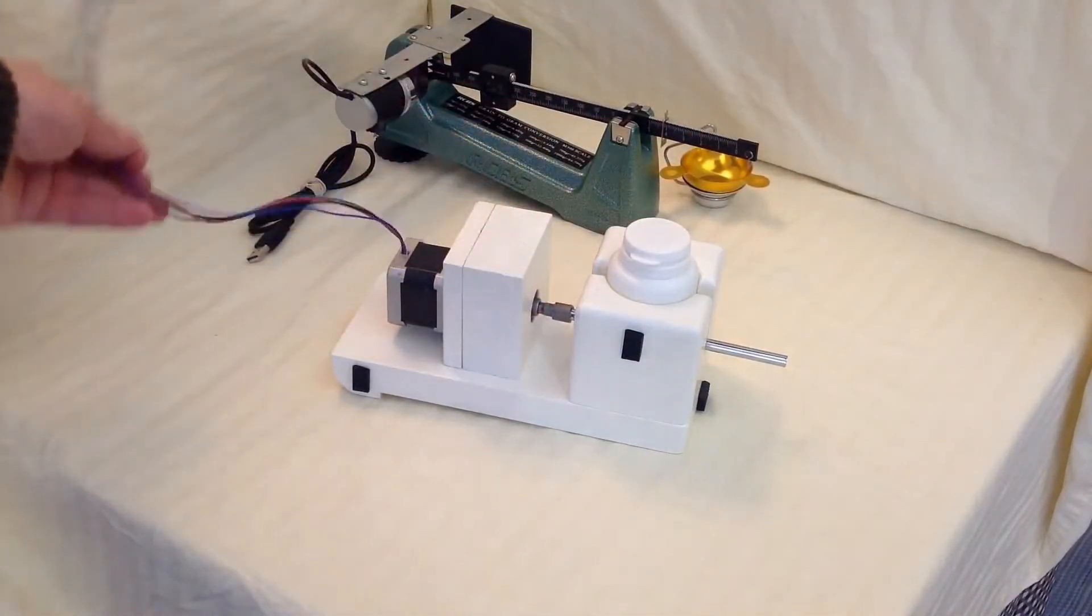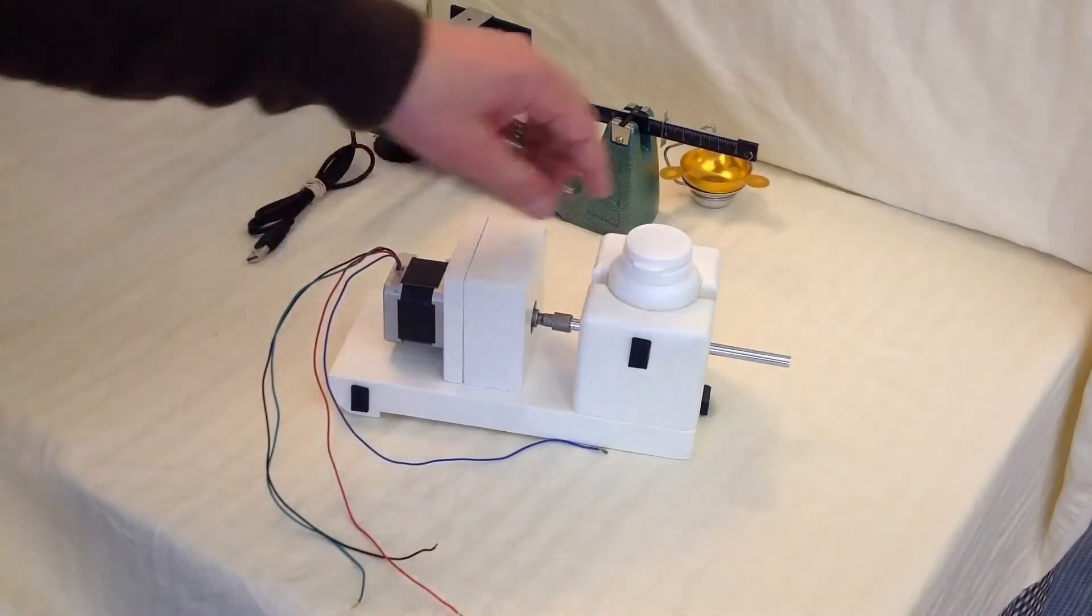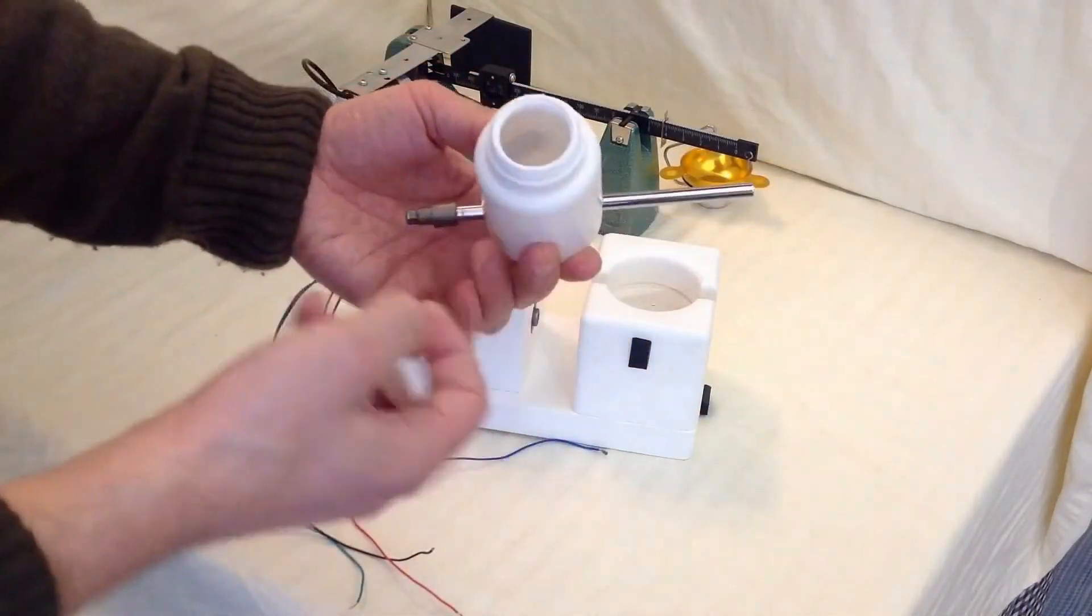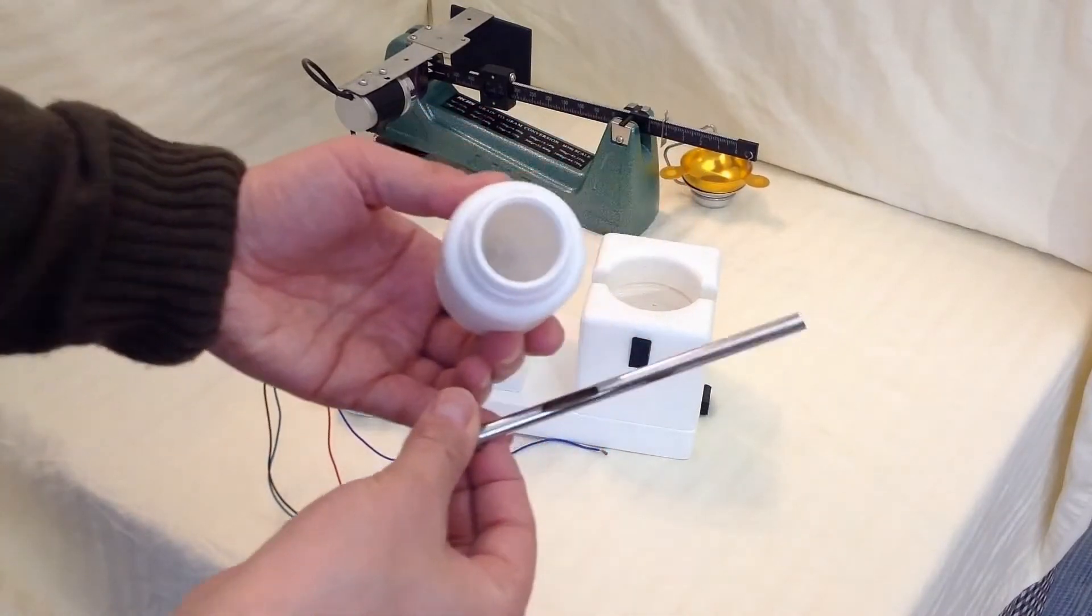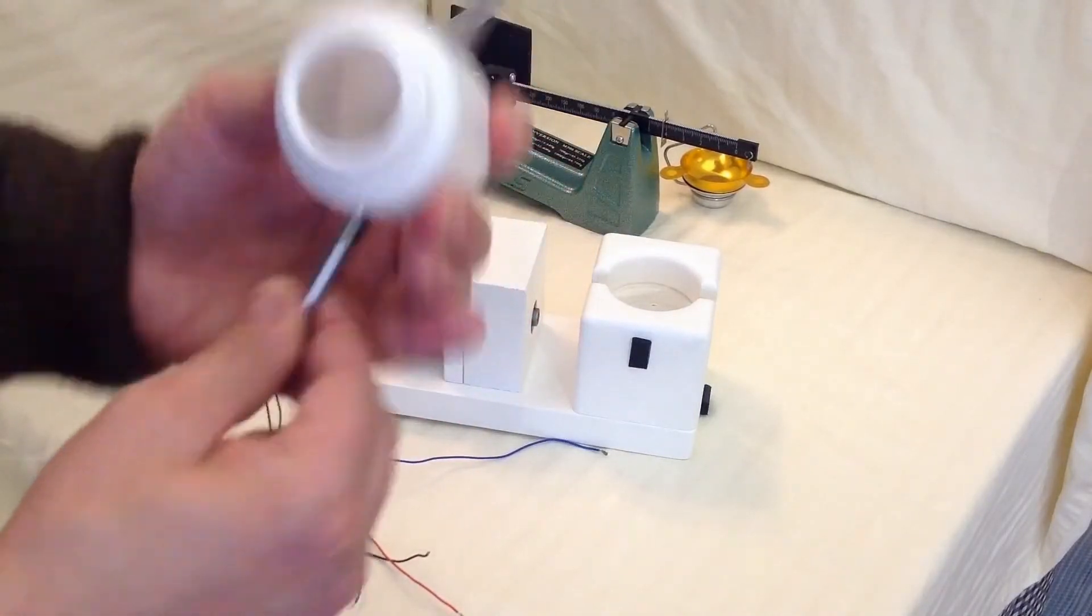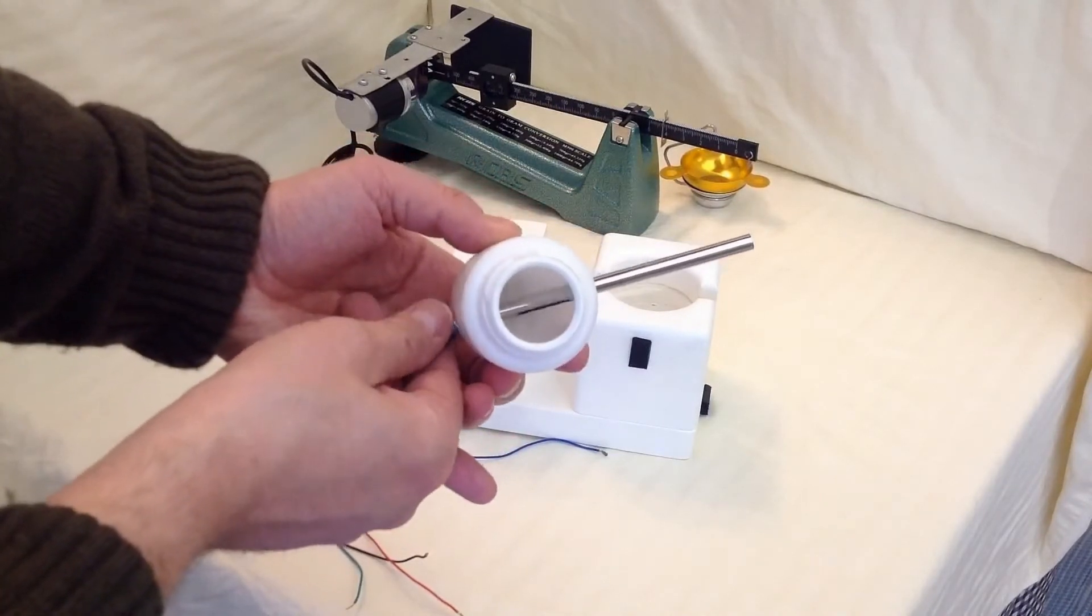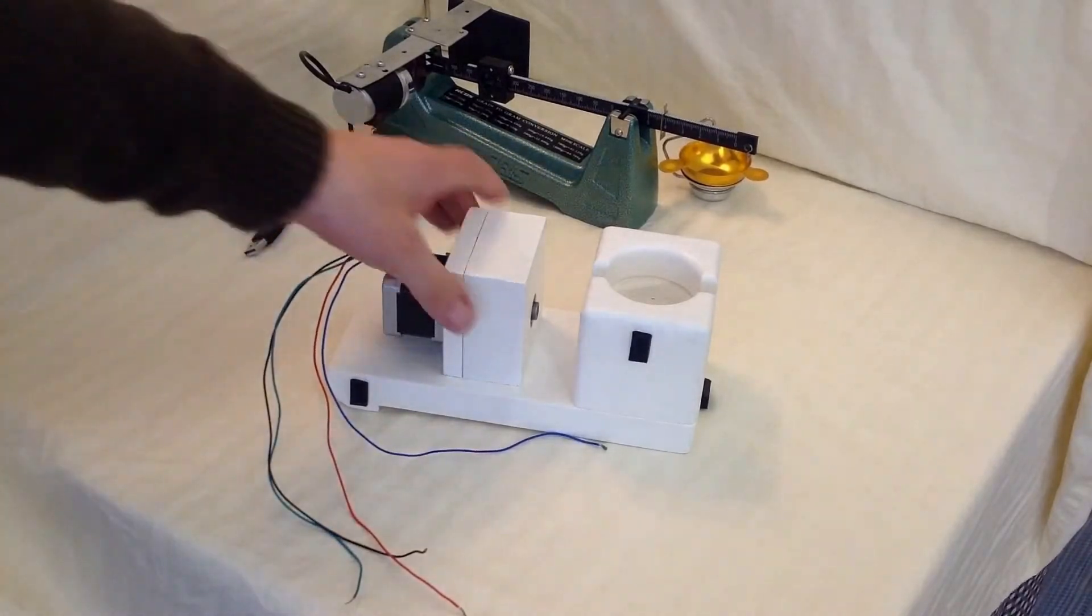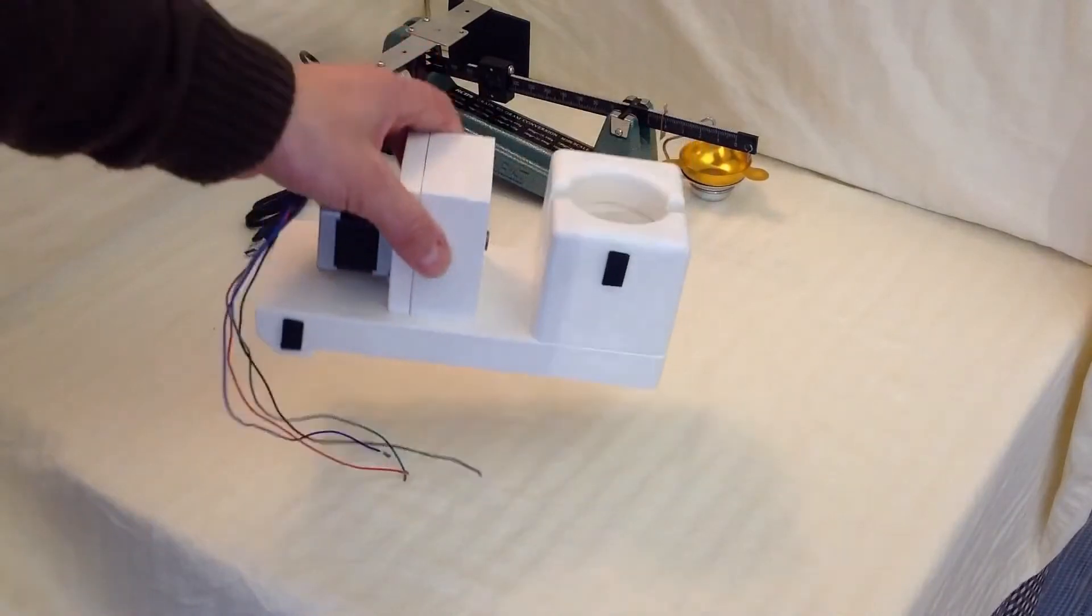The powder feeder consists of a 12V bipolar stepper motor, a carrier console and a powder hopper. The hopper is made from a plastic jar and a section from an FM radio antenna. The carrier console is equipped with a boasting heel to give the feeder a small angle.